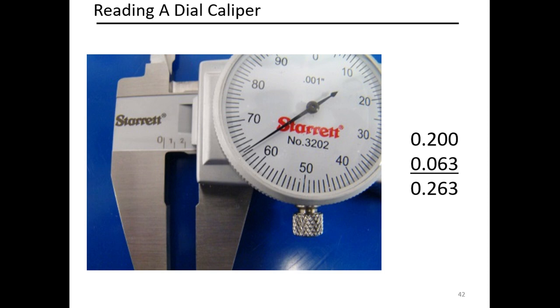And we're showing 63 on the dial, not quite 64. You never want to interpolate and go with the higher number. Always the lower number. We add in 63 thousandths to make .263 inches.